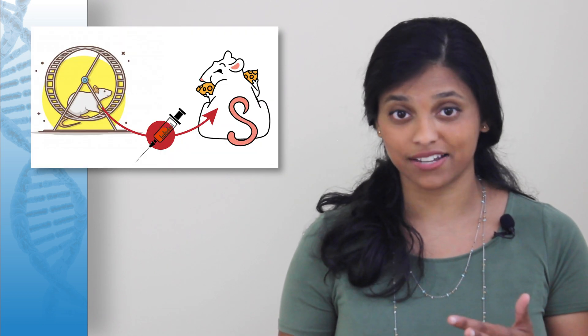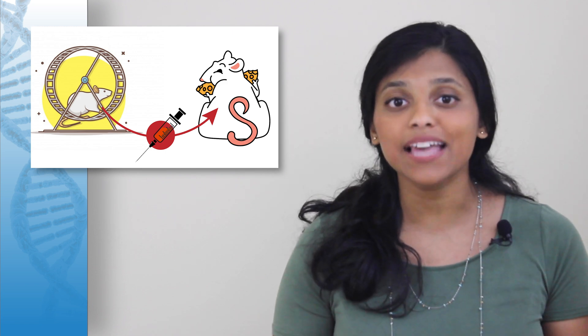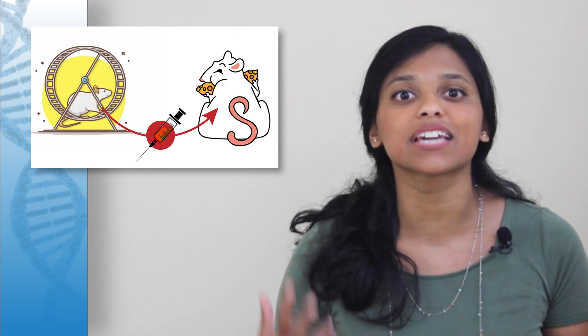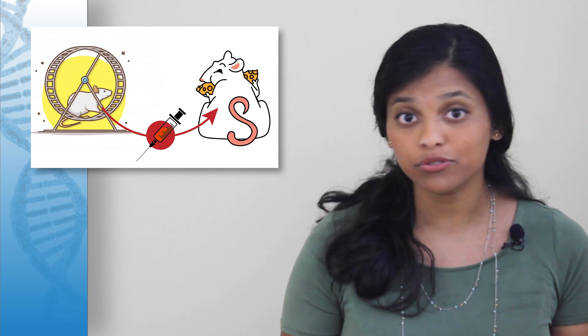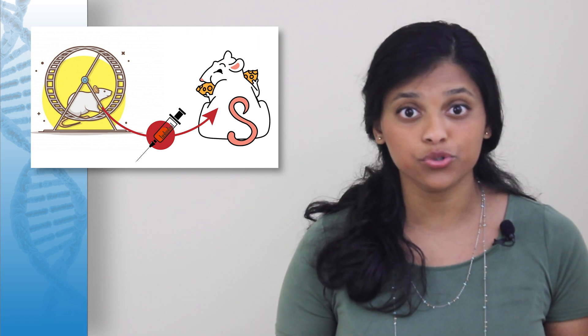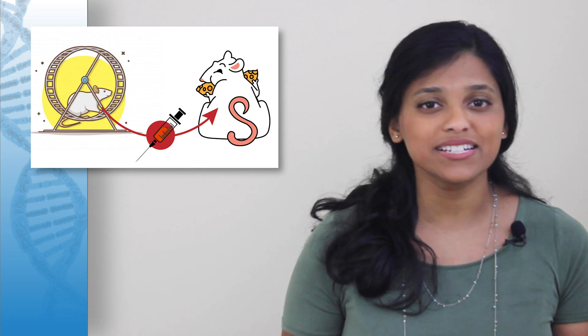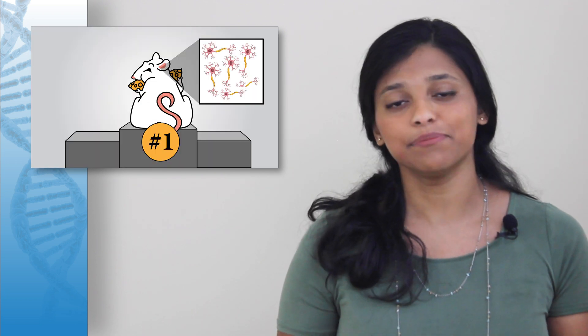Even cooler though, taking blood plasma from the exercising mice and giving it to the couch potato mice had the same benefits for the brain as if the couch potatoes were doing the exercise themselves. Without having run multiple miles on the wheel, the couch potato mice who got transfusions were able to get through mazes and recognize objects, and their brains even showed the same neuron growth.